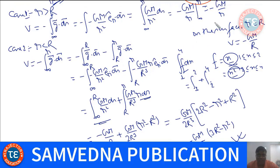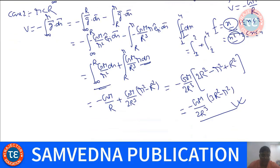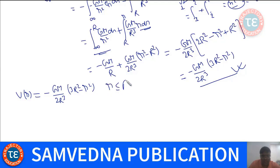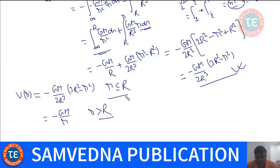To summarize: the potential due to a solid sphere is -GM/R for points outside, and -GM/(2R³)(3R² - r²) for points inside. We have now found the potential due to famous bodies: a ring, a disk, a solid sphere, and a spherical shell.